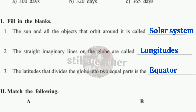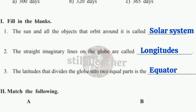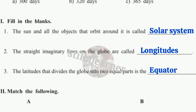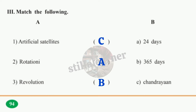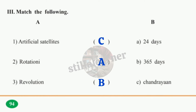Fill in the blanks: The sun and all the objects that orbit around it are called the Solar System. The straight imaginary lines on the globe are called Longitudes. The latitude that divides the globe into two equal parts is called the Equator. Match the following: Artificial satellite → C (Chandrayaan). Rotation → A (24 hours). Revolution → B (365 days).